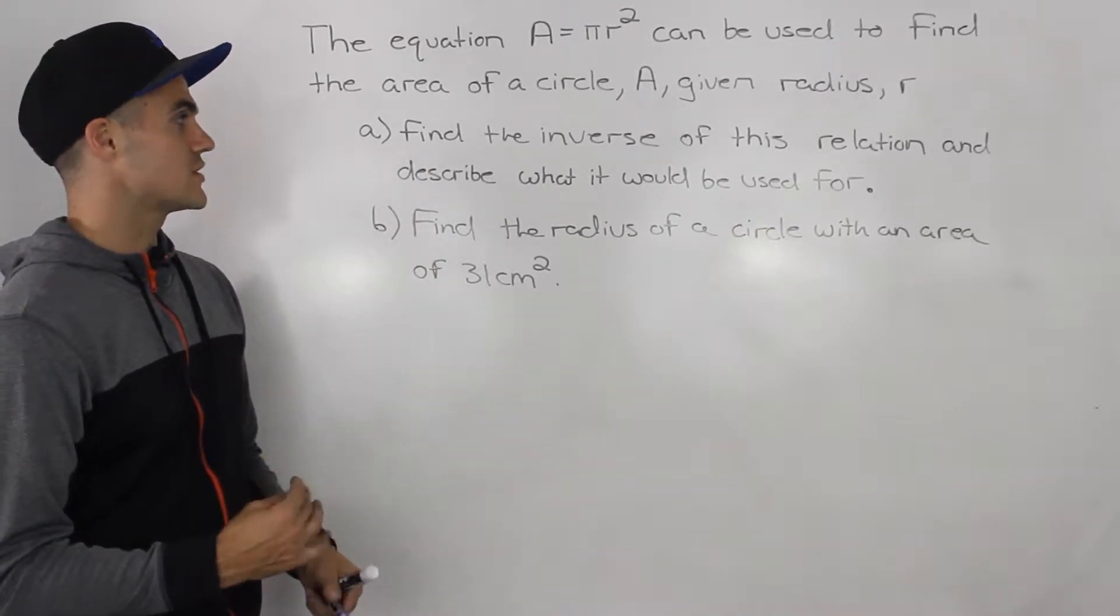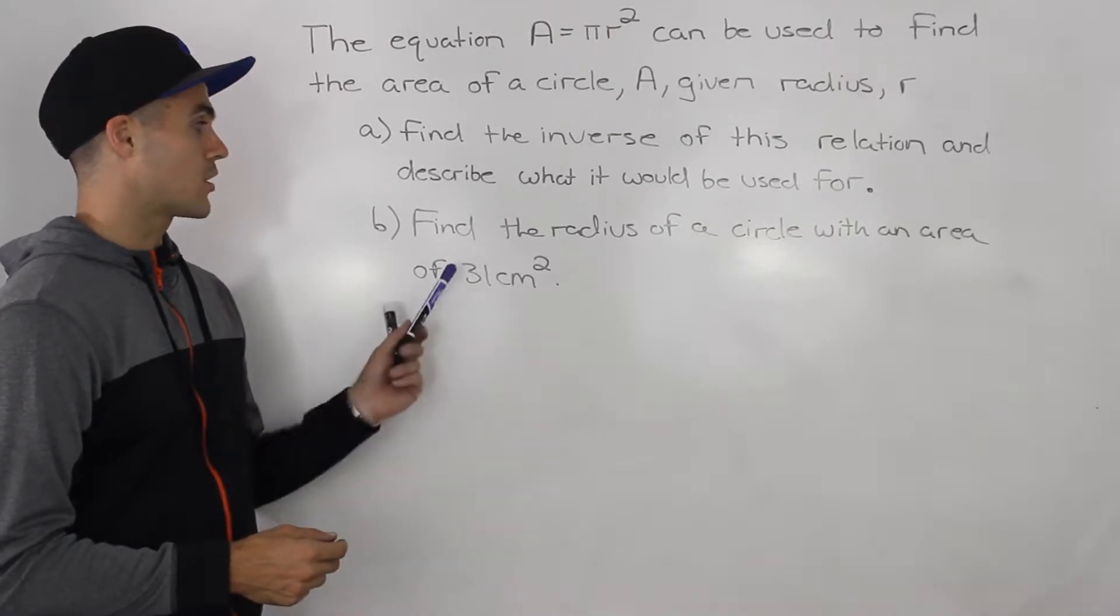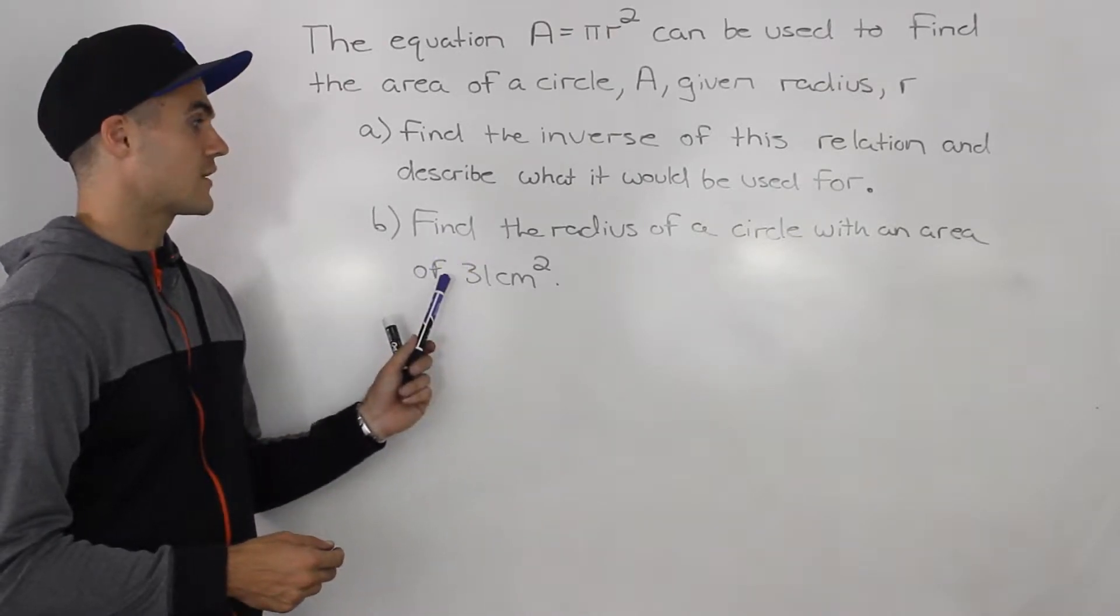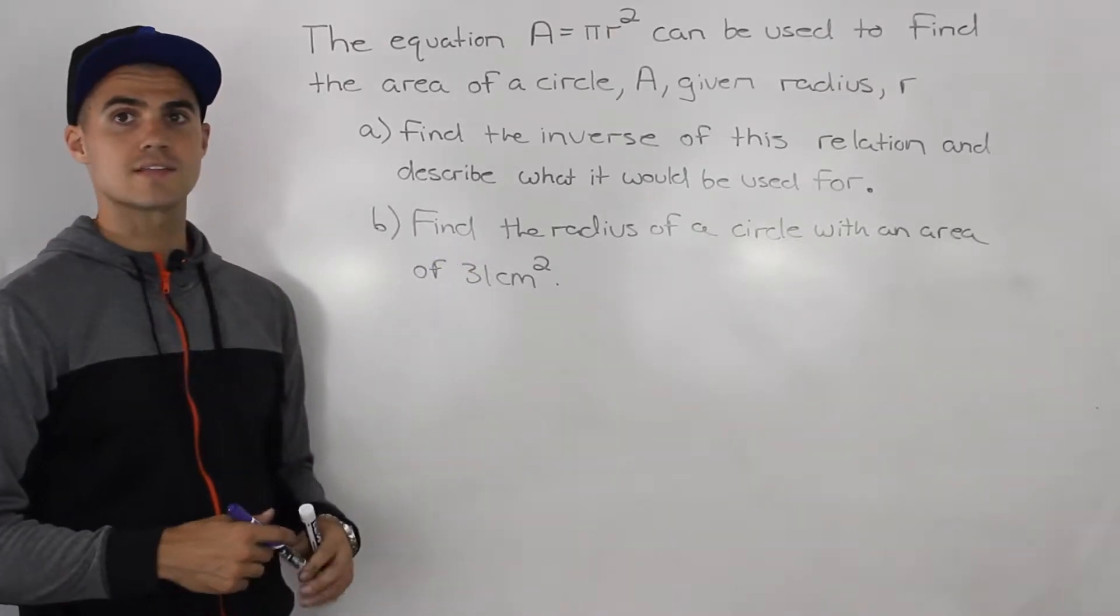We have to find the inverse of this relation and describe what it would be used for. And then part b, find the radius of a circle with an area of 31 centimeters squared.